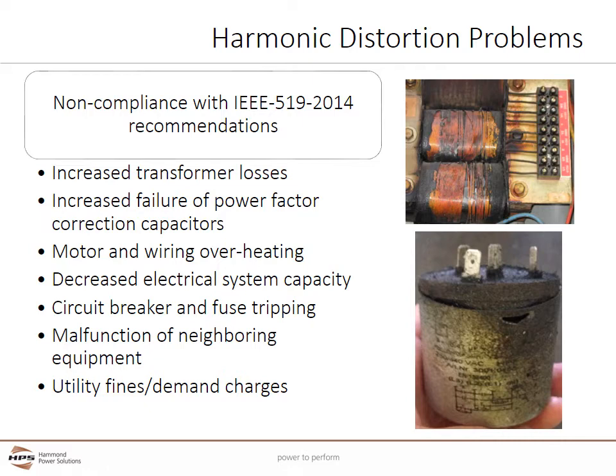Utilities will fine customers for power quality falling below the IEEE 519 threshold. Ultimately, utilities want to bill customers for the actual cost of producing the power, also known as watts, not just the volt amps.